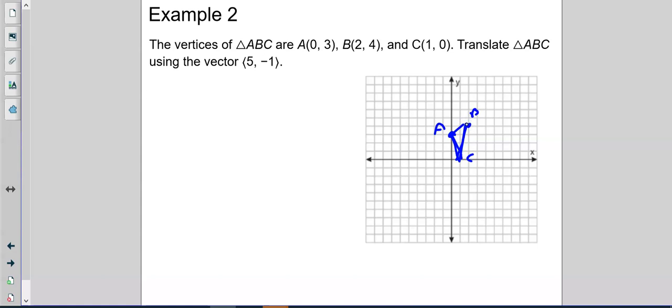Translate it using the vector 5, negative 1. So what we're going to do is we're going to move each point 5 to the right. And down 1. So right 5, down 1. So from A, I'm going to start at C actually, so I'm not writing over myself. So I'm going to go 1, 2, 3, 4, 5 to the right and down 1. And that's my C prime. Now from B, I'm going to go 1, 2, 3, 4, 5 and down 1. That's my B prime. And from A, I'm going to go 1, 2, 3, 4, 5 but then down 1.